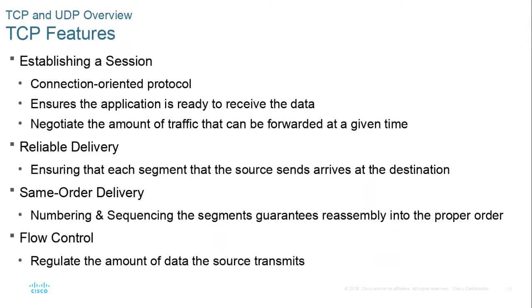TCP is connection-oriented and uses a procedure for establishing a session between two hosts. It sends out a SYN, SYN-ACK, ACK stream to confirm both machines are ready to send and receive data. During this setup they also negotiate how much traffic can be sent in one chunk. For example, an Amazon.com web server on Prime Day is very busy, so it will tell your machine to slow down and send data more slowly since it has a million other people connected.